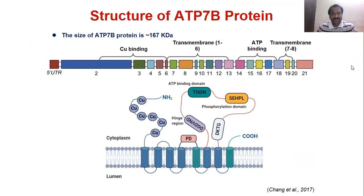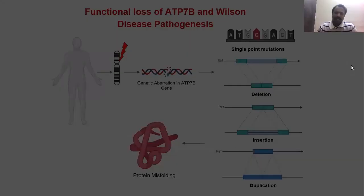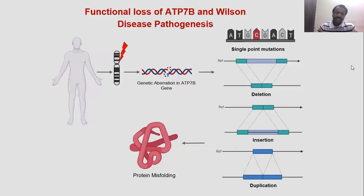Coming to the structure of the ATP7B protein, similar to other copper transporters, it has a copper binding domain, transmembrane domain, and ATP binding domain. There are different genetic aberrations in ATP7B reported, including single point mutations, deletions, insertions, and duplications. All of these lead to protein misfolding.